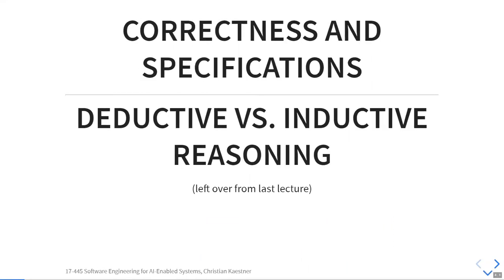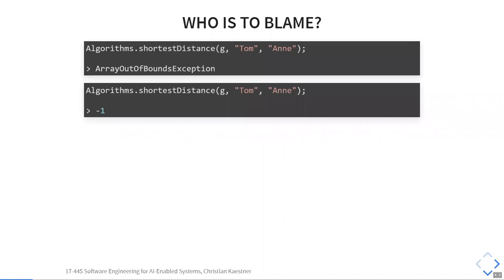I had one point at the end about specifications and correctness that I kind of rushed, so I want to come back to this in more detail. Here's an example: let's assume we're doing some graph algorithm — the original scenario was analyzing friendship graphs on Facebook. We have some graph library that computes the shortest distance between two people, and you might call it and get an array out of bounds exception, or you get minus one.